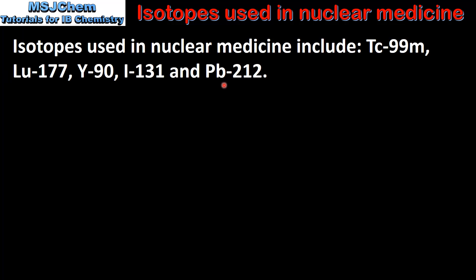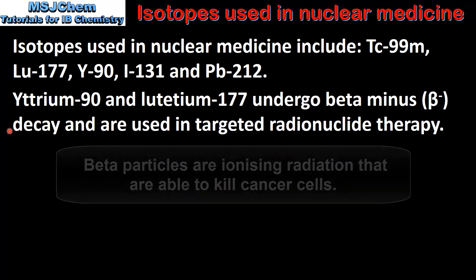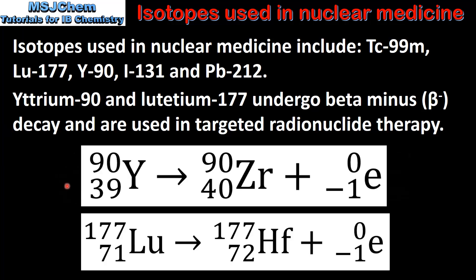Lead-212 is used in targeted alpha therapy, which was covered in a previous video. Yttrium-90 and lutetium-177 undergo beta-minus decay and are used in targeted radionuclide therapy. In these two equations we can see the beta-minus decay of yttrium-90 and lutetium-177. Note that the mass number stays the same and the atomic number increases by 1.